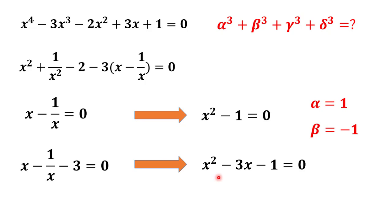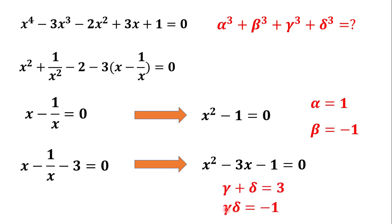The product of the roots equals the constant term divided by the coefficient of x squared. So gamma plus delta equals minus(minus 3) divided by 1, which equals 3, and gamma times delta equals minus 1 over 1, which equals minus 1.